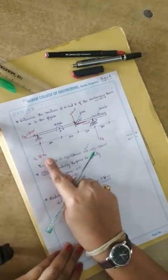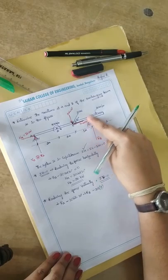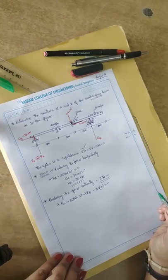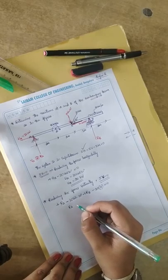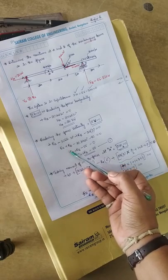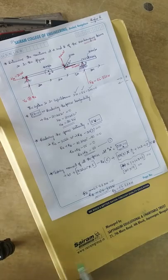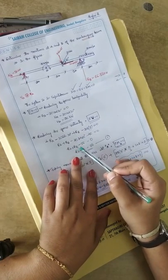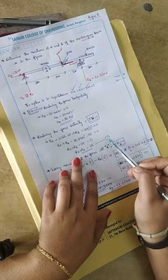Collecting all vertical forces: RA − 30 sin 30° + RB − 20 × 2 = 0. After substitution, RA + RB − 55 = 0, so RA + RB = 55. We are calling this equation number 1.